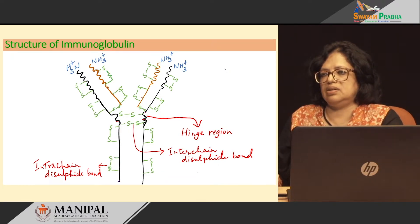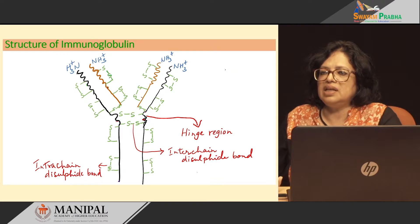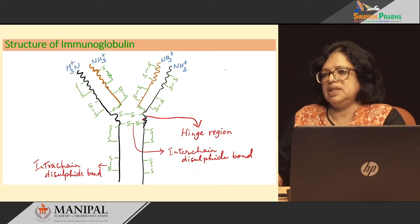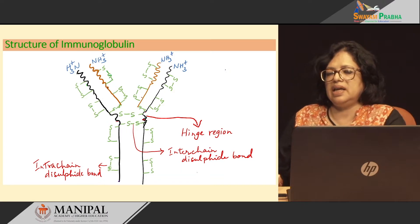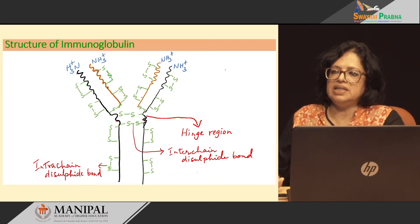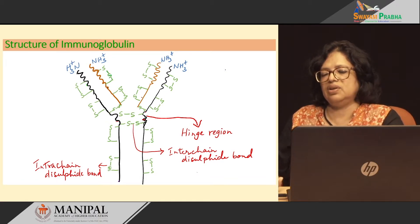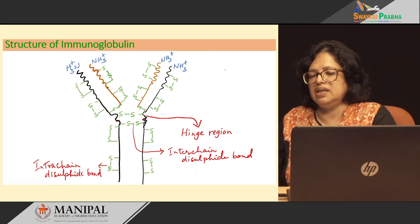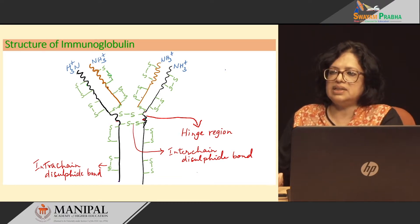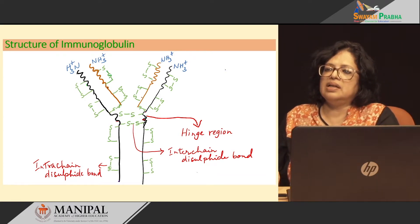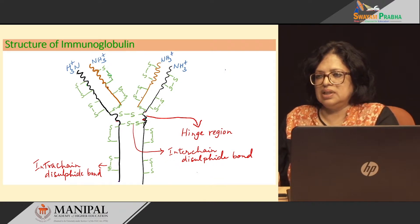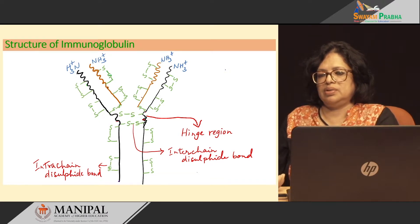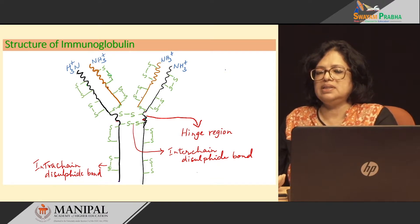This is the general structure of the immunoglobulin. Between the heavy chain and the light chain you can also see SS bonds — these are the disulfide bonds. These are the inter-chain disulfide bonds which link the heavy chain with the light chain. We also have inter-chain disulfide bonds in the hinge region between the two heavy chain molecules. There are a number of ways by which the immunoglobulin structure is stabilized.